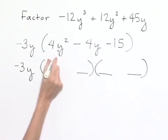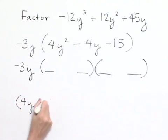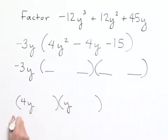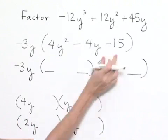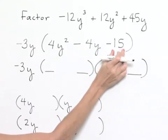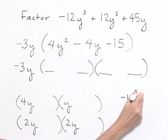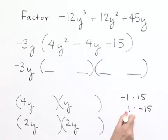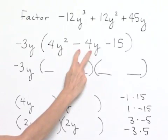We're going to look at the combinations that give us 4y squared. We could have 4y multiplied times y, or we could have 2y multiplied times 2y. Then we look at our last term, negative 15. To end up with negative 15, we could have negative 1 times 15, 1 times negative 15, 3 times negative 5, or negative 3 times 5. We need to find which combination gives us the middle term of negative 4y.